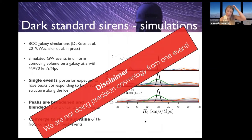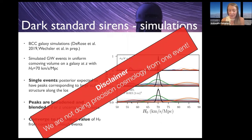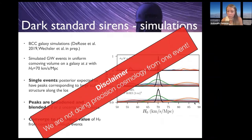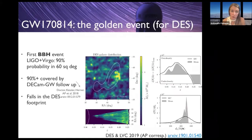We cannot do precision cosmology from one or even a few events without a counterpart. Even in optimistic scenarios with current localization, you get a very broad posterior with peaks that may not even land at the right H0 value. The important thing is that after combining hundreds of events — on the order of 100 — we get a very nice measurement. We were able to do this for the first time with GW170814, the first binary black hole detected by both LIGO and Virgo, giving much smaller localization error. We covered more than 90% of the probability with our DECam follow-up, found no interesting counterparts, making it a good dark standard siren candidate — especially as it falls right in the middle of the DES footprint.